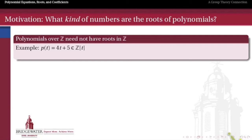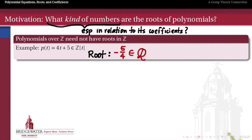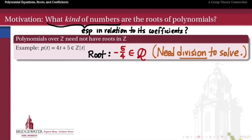Here's the big question: what kinds of numbers are the roots of polynomials going to be? The kind of numbers you build your polynomial out of are not always the same kind of numbers that solve that polynomial. For instance, if you build a polynomial with integer coefficients, the roots don't have to be integers. Even a polynomial as simple as 4t plus 5 — its root is negative 5 fourths, not an integer but a rational number. In general, to find the roots of a linear equation, we need to be able to divide, and in the integers we can't divide one integer by another and expect an integer. So to solve first-order equations with integer coefficients, we need the rationals.